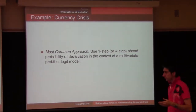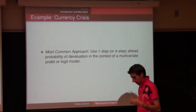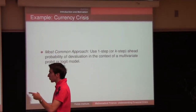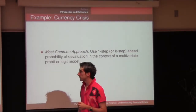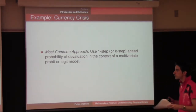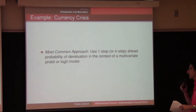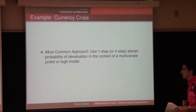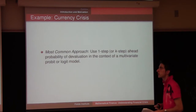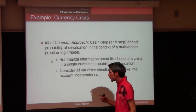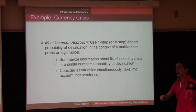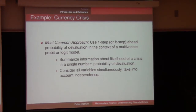In the literature, the most common approach to predict currency crisis is using a regression setting. You use the one-step or k-step ahead probability of devaluation in the context of a multivariate probabilistic model. These regression models find the probability of devaluation, summarizing all the information about the likelihood of a crisis into a single number.